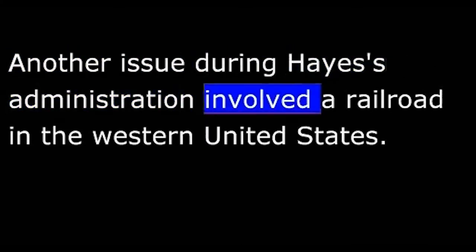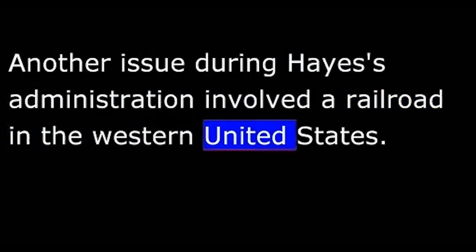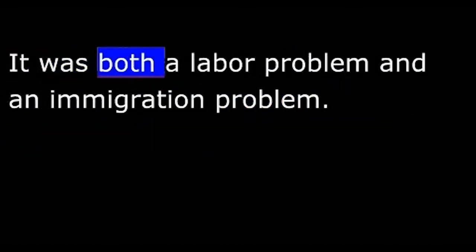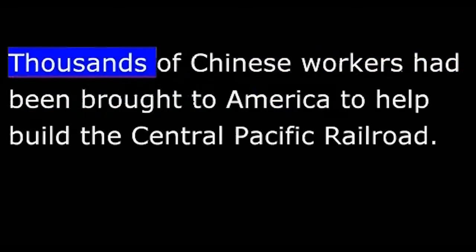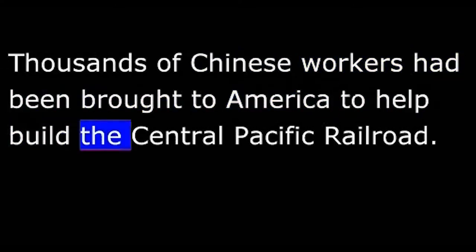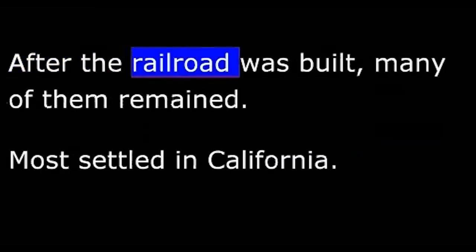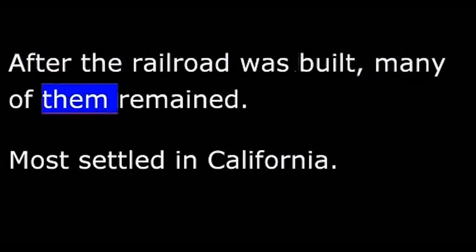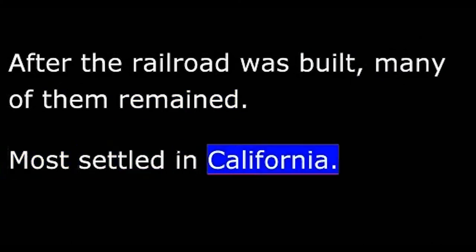Another issue during Hayes' administration involved a railroad in the western United States. It was both a labor problem and an immigration problem. Thousands of Chinese workers had been brought to America to help build the Central Pacific Railroad. After the railroad was built, many of them remained — most settled in California.